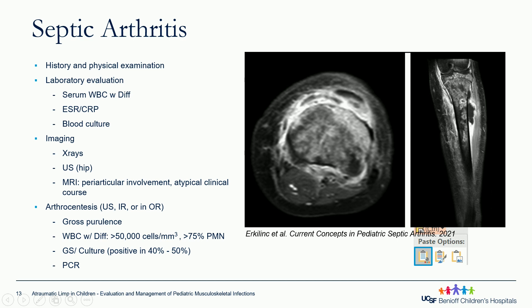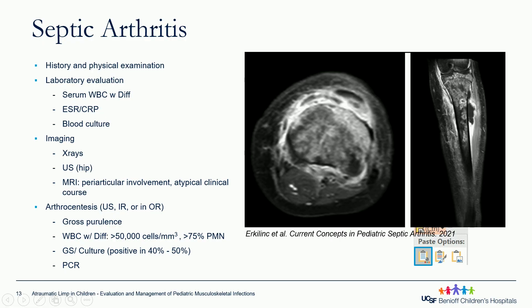Arthrocentesis is the gold standard for diagnosis. If it's in the hip, it can be done ultrasound-guided, via interventional radiology, or in the operating room. Often you can see gross purulence. For cell analysis, a white count greater than 50,000 cells is diagnostic, although you can sometimes see less than that. Greater than 75% PMNs is also another high-risk indicator. Culture and Gram stain — it's not always positive.